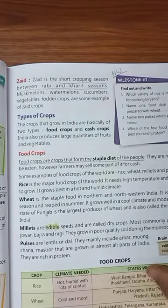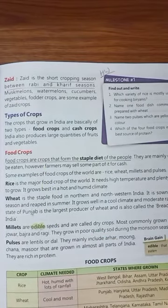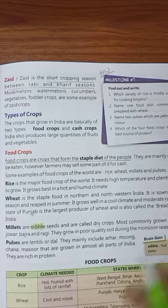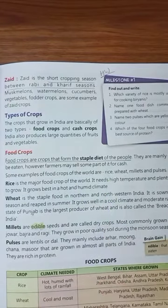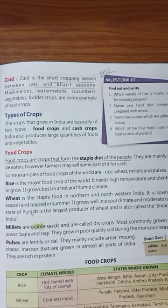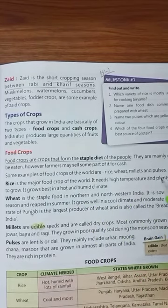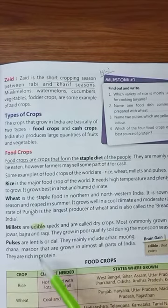Types of crops — there are two types of crops: cash crops and food crops. What are food crops? Food crops are the crops that form the staple diet of the people. They are mainly grown to be eaten. However, farmers may sell some part of it for cash, but actually they are grown for using at home. Examples of food crops are rice, wheat, millets and pulses.